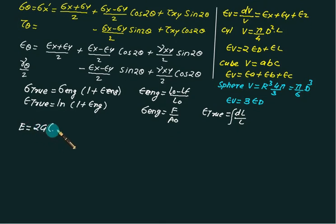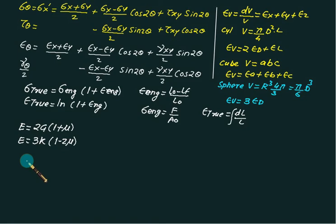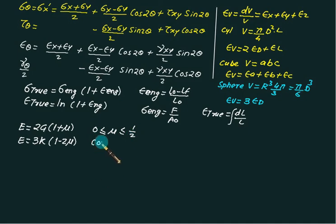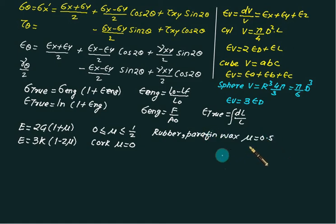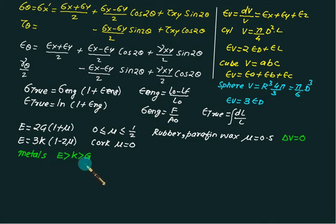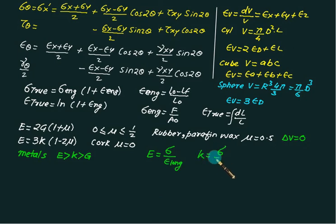We have three standard elastic constants: Young's modulus E, modulus of rigidity G, and bulk modulus K. The relations are: E = 2G(1 + μ) and E = 3K(1 − 2μ). The maximum value of Poisson's ratio μ is 1/2, and μ always ranges from 0 to 1/2. For metals: E > K > G. Bulk modulus K is defined as hydrostatic stress divided by volumetric strain.